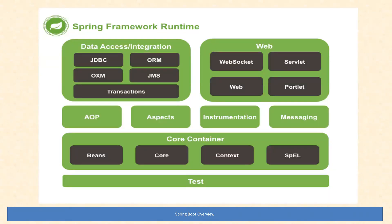Looking at Spring framework components, we have majorly: data access and integration, web-related things, AOP — aspect-oriented programming — then the core container, and test-related things. Coming to the core container of the Spring framework, we have beans — beans are nothing but POJOs. We have a core module, a context module, and SPeL — Spring Expression Language. These are all used to manage the beans, bean dependencies, and these are all handled at the core level.